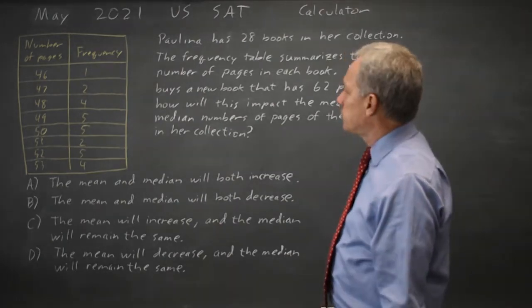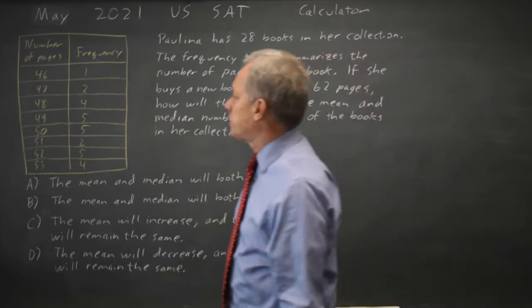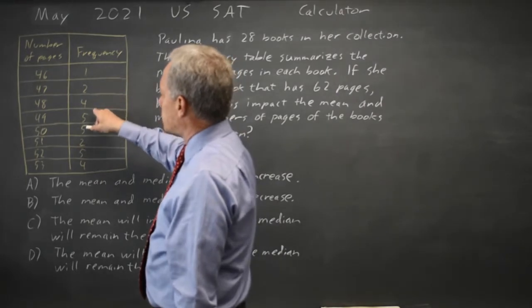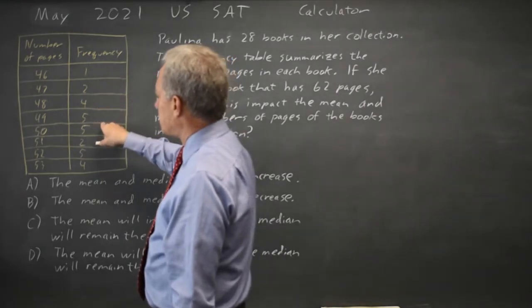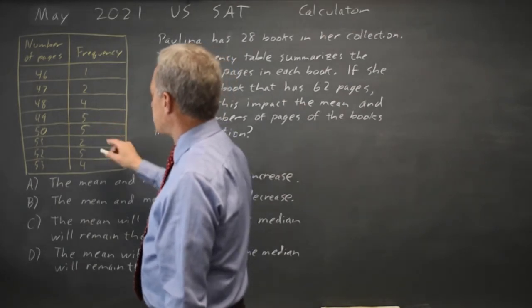There are 28 books in this table, so the median will be between the 14th and 15th book. Counting up, 1 plus 2 is 3, plus 4 is 7, plus 5 is 12, plus 5 is 17.